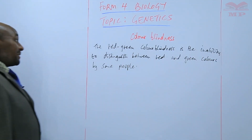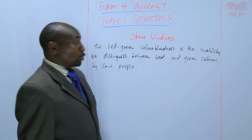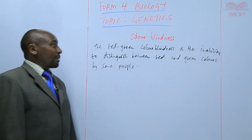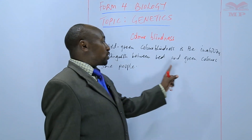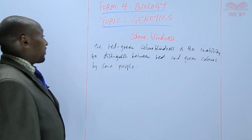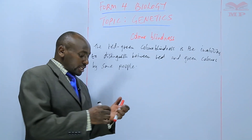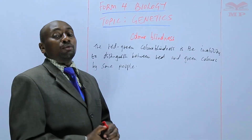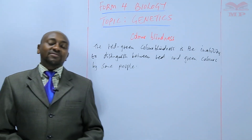So that is color blindness — the red-green color blindness is the most common type, whereby individuals are unable to distinguish between red and green colors. This trait is brought about by, or caused by, a recessive gene.